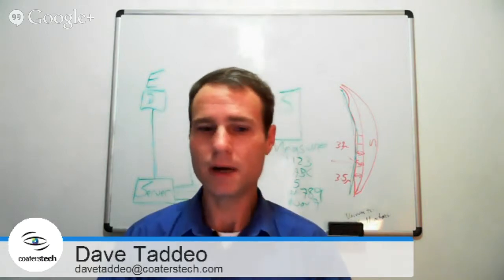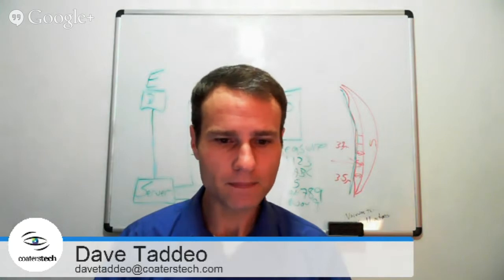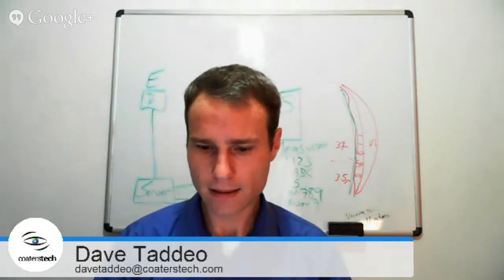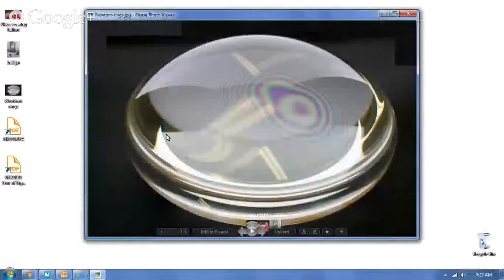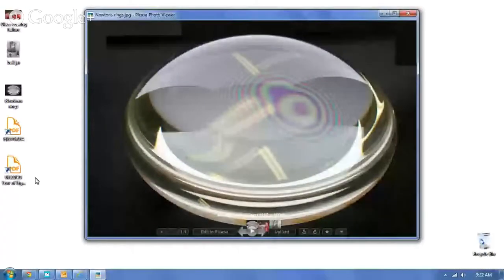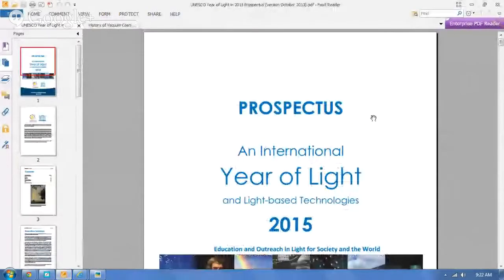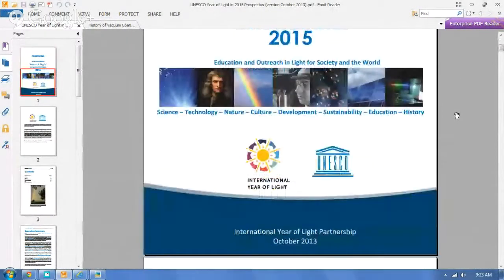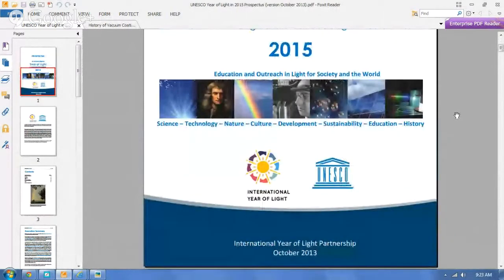So the next thing I want to talk about is UNESCO is proposing that 2015 is going to be the year of light, which is excellent. I got this the other day. This is from, I think, mid-October. The International Year of Light from UNESCO.